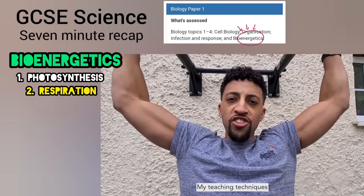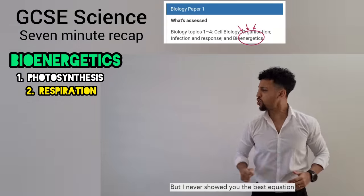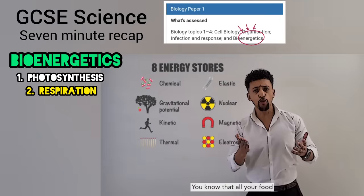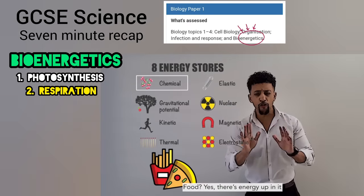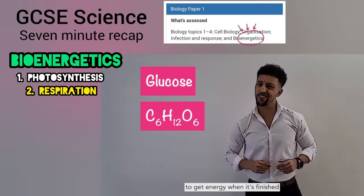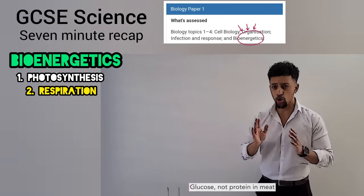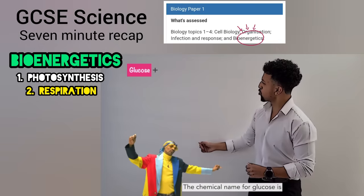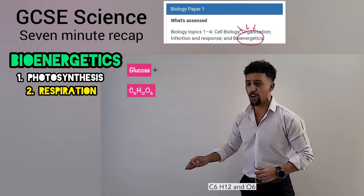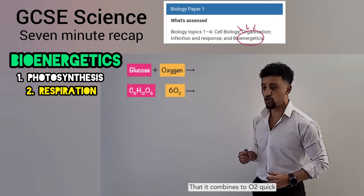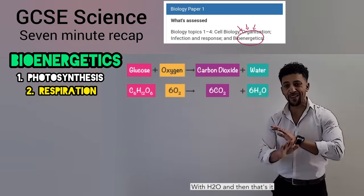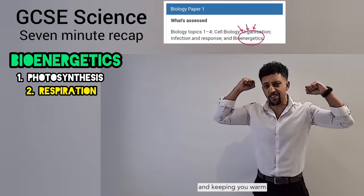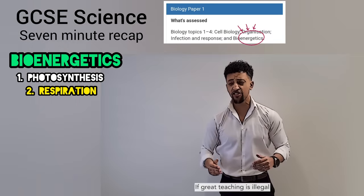Now I'll start with respiration. You know that all your food has got energy in it — chemical energy. Glucose is the chemical name. The body breaks it down to get energy. The chemical formula for glucose is C6H12O6. It combines with O2 — CO2 is made, along with H2O. Flip that back and it's photosynthesis. Now you need to know what the energy's for: muscle contraction and keeping you warm.